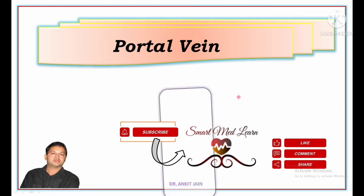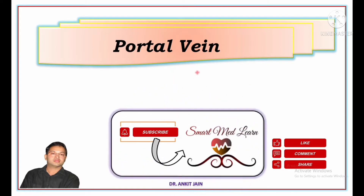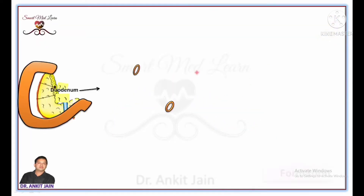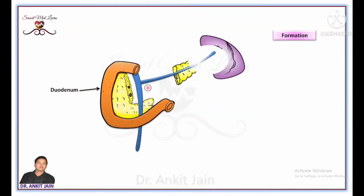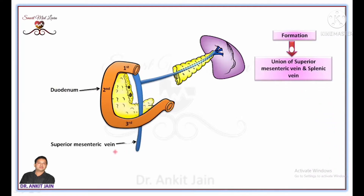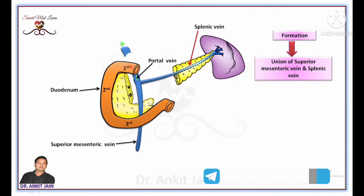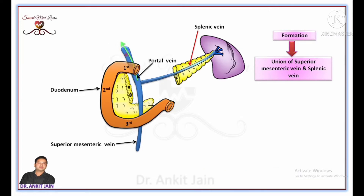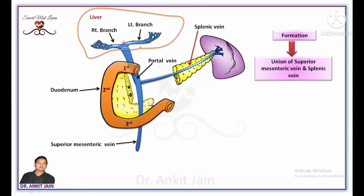In this video, I am going to discuss about the portal vein. Portal vein is formed behind the neck of the pancreas by the union of superior mesenteric vein and splenic vein. Portal vein runs upward behind the first part of the duodenum and enters the right free margin of lesser omentum. Before entering into the liver, it divides into right branch and left branch.